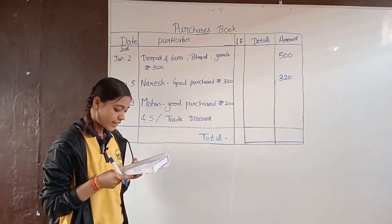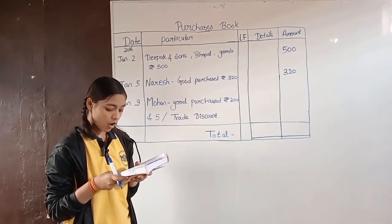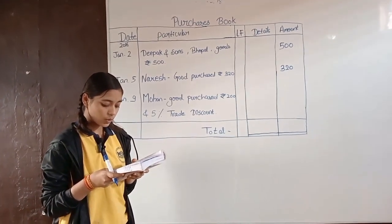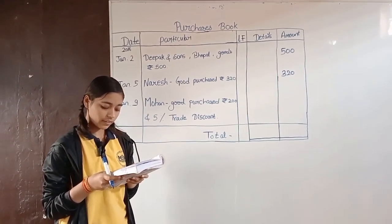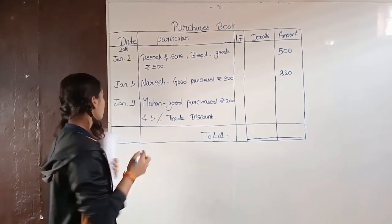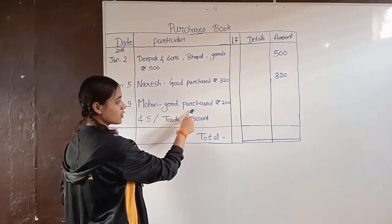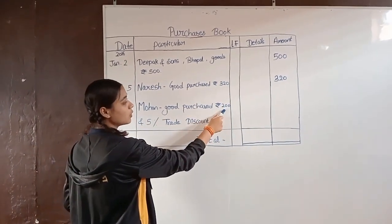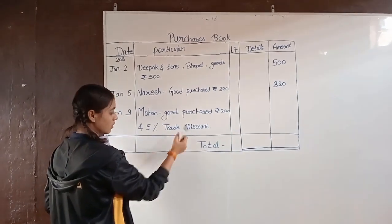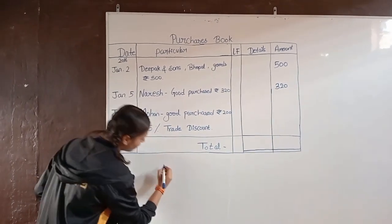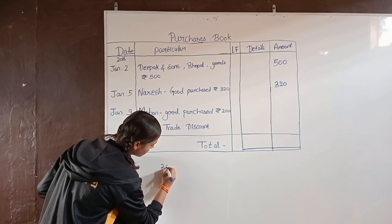9th January 2016: goods purchase of Rs. 200 from Mohan on 5% trade discount. January 9 entry — Mohan goods purchase Rs. 200, and 5% trade discount. Now, we will calculate the 5% trade discount.